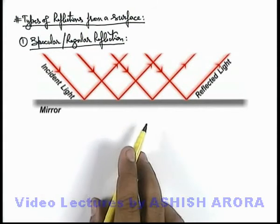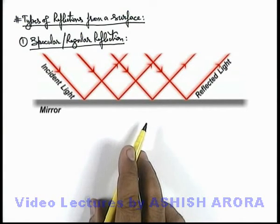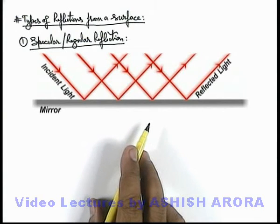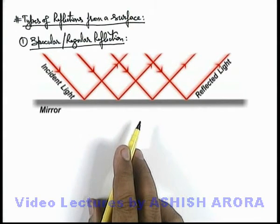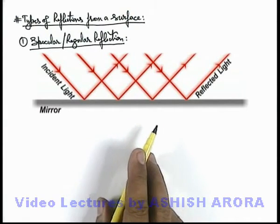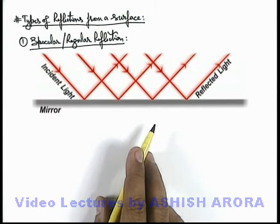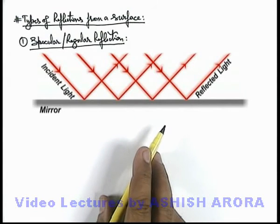So a light beam incident on the surface will be reflected as it is. For example, if this is a plane mirror on which a light beam from a source of light is incident, then it is reflected only in one direction. So unless we see the beam from the side in which it is going, we won't be able to see the source of light or the reflected light, because it is reflected only in one direction.